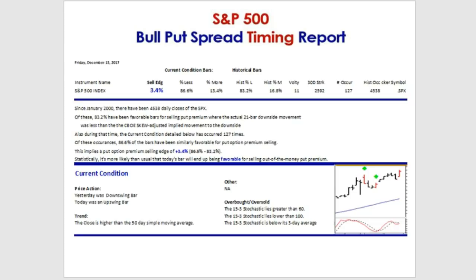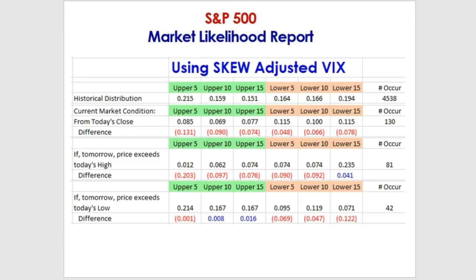Statistically, right now the current market condition is one that is more favorable for selling out-of-the-money put premium, looking at the history of this market condition in the past. That's it for the bull put spread report. Let's now go to the market likelihood report.